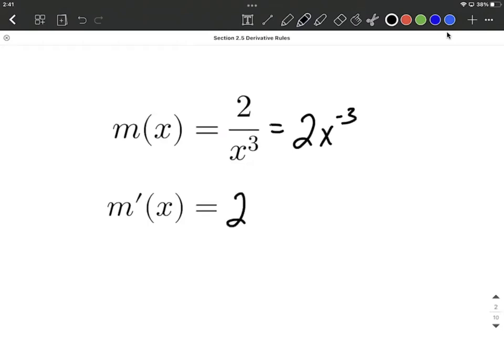So the power rule is going to say, well, I'll go ahead and bring the two along and just focus on x to the negative third. Exponent comes down. Reduce the exponent by one.